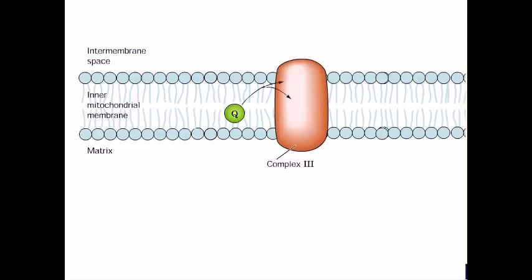Complex 3 accepts electrons from reduced coenzyme Q and transports them to cytochrome C. It contains 11 protein subunits, 3 cytochromes, and 1 iron-sulfur center. It translocates 4 protons per 2 electrons transferred to cytochrome C.